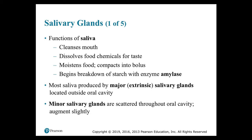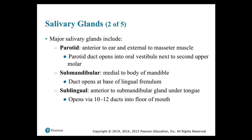Salivary glands: there are three pairs that secrete into the oral cavity. Functions of saliva include cleansing the mouth, dissolving food chemicals for taste, moistening food and compacting it into a bolus, and beginning the breakdown of starch with the enzyme amylase. Most saliva is produced by the major extrinsic salivary glands: the parotid, the submandibular, and the sublingual. The parotid is anterior to the ear and external to the masseter muscle; its duct opens into the oral vestibule next to the second upper molar, and it produces a serous secretion containing large amounts of salivary amylase.